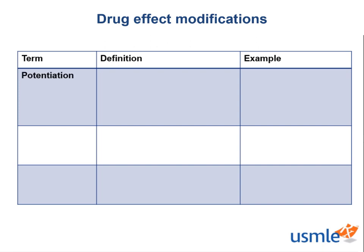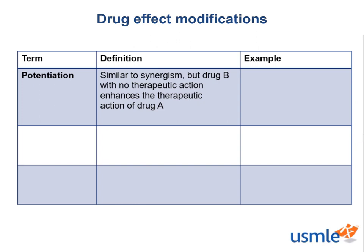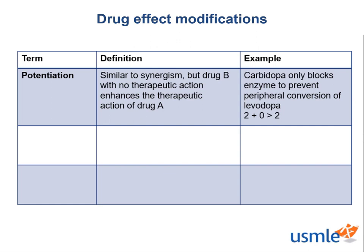Next, let's discuss the term potentiation, which is similar to synergism, but drug B, with no therapeutic action, enhances the therapeutic action of drug A. Mathematically, drug B would be represented as 0, and drug A would be some number like 2, and the effects together would be greater than 2, as shown here. For example, when we discuss Parkinson's disease therapy, levodopa should come to mind — but we always think of levodopa with carbidopa. Carbidopa only blocks an enzyme — dopa decarboxylase — to prevent the peripheral conversion of levodopa to dopamine.